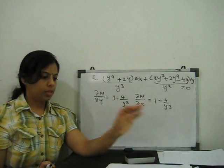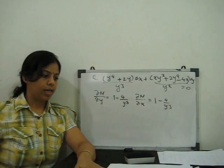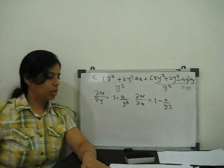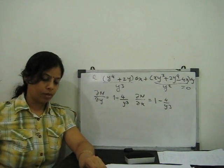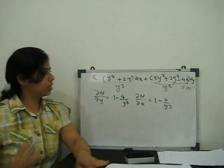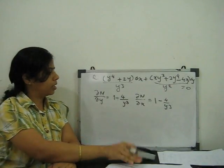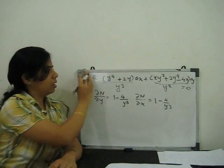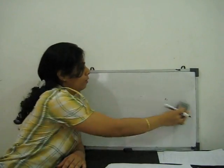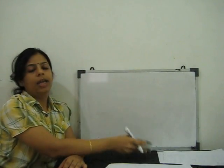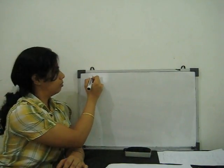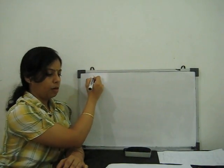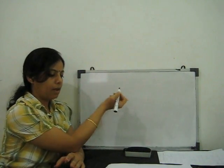Next, we will look at another example for Case 3, where the given equation is a function of xy with M dx — meaning y is also multiplied.